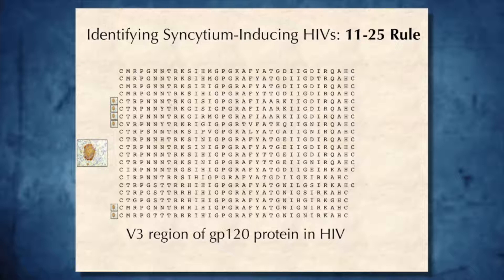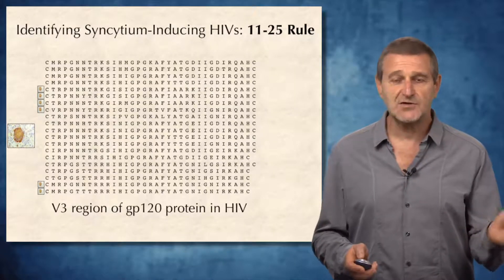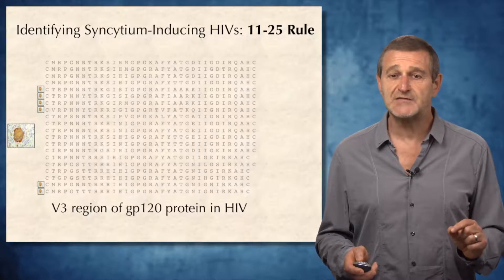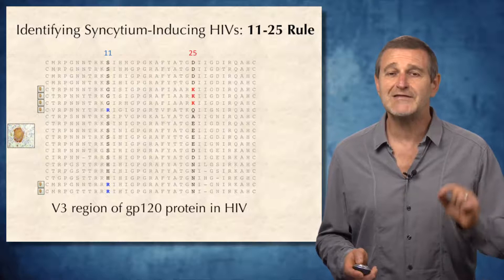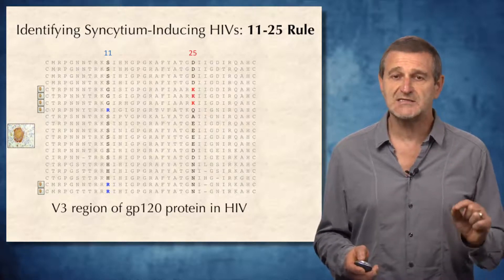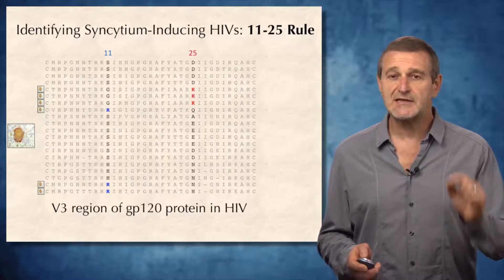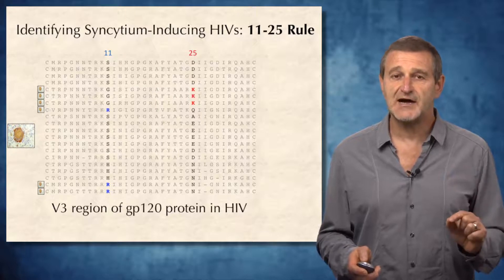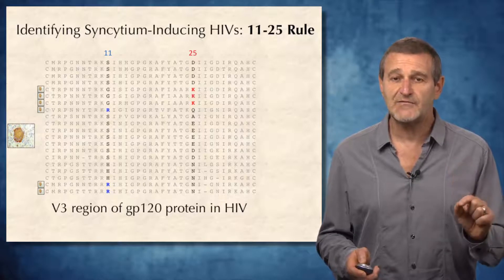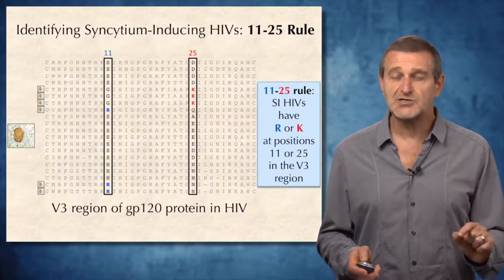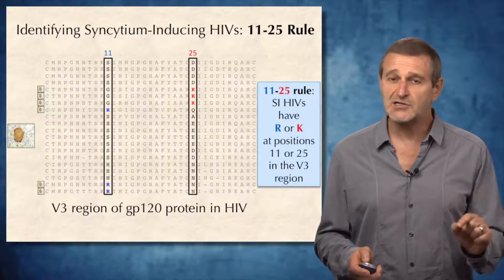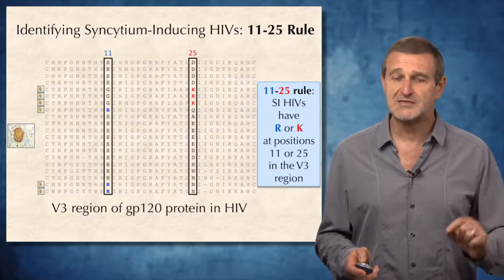We will examine 20 sequences from protein GP120, specifically from a particularly conserved region called the V3 loop. Despite being conserved, these sequences have many mutations and even different lengths, so we definitely need to align them. We know that six of these sequences have the syncytium-inducing phenotype. Biologists noticed that in HIV viruses with syncytium-inducing phenotype, the amino acids at positions 11 and 25 of the V3 region are arginine and lysine, and this became the first computational rule for classifying syncytium-inducing phenotype. The classification rule later turns out to be much more complex, but we will not go into those details.